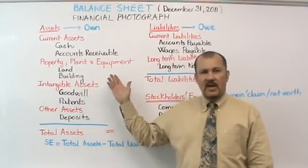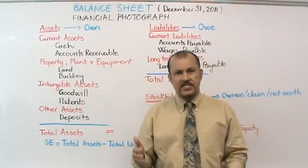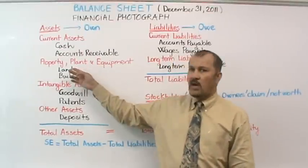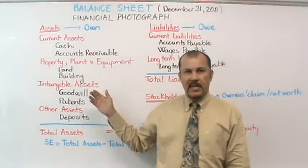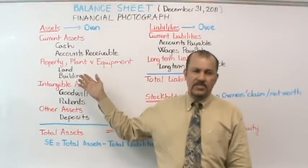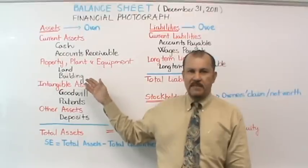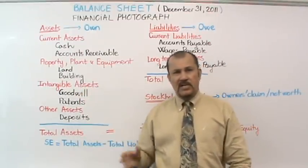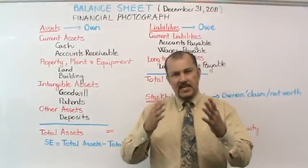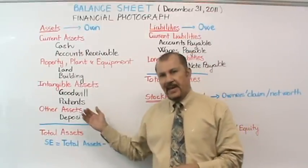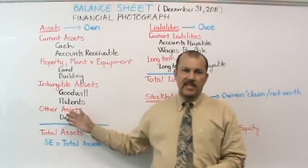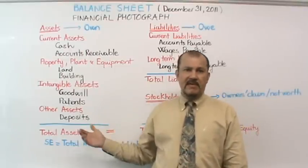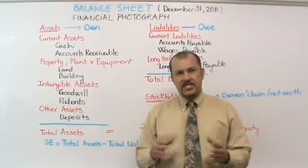Next, we have other sections that broadly fall under the umbrella of long-term assets. The first subsection is property, plant, and equipment. Examples of accounts in this subsection would be land and building. Then you have another subsection called intangible assets — accounts here include goodwill and patents. Then there is a catch-all subsection called other assets, one example being deposits.